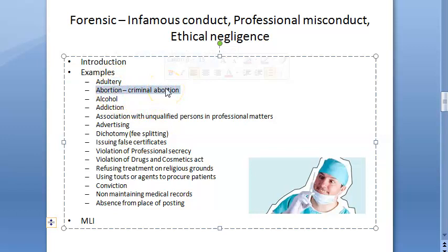The second A is criminal abortion — not normal abortion. This includes performing an unlawful abortion or enabling an unqualified person to perform an unlawful abortion, contrary to the MTP Act. Prenatal determination of gender and then inducing abortion based on that also constitutes professional misconduct.